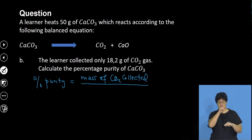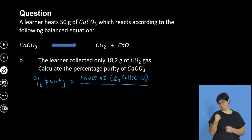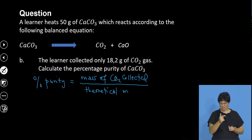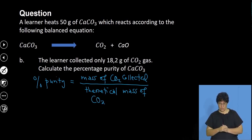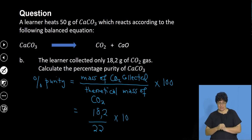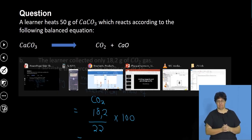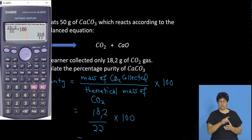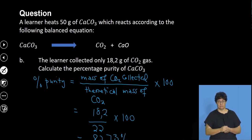The percentage purity of the calcium carbonate equals the actual mass of carbon dioxide collected divided by the theoretical mass of carbon dioxide — the one calculated using the stoichiometric ratio — multiplied by 100. The actual mass is 18.2 grams and the expected mass is 22 grams. So: 18.2 ÷ 22 × 100 = 82.73%. The percentage purity is 82.73%, expressed to two decimal places.